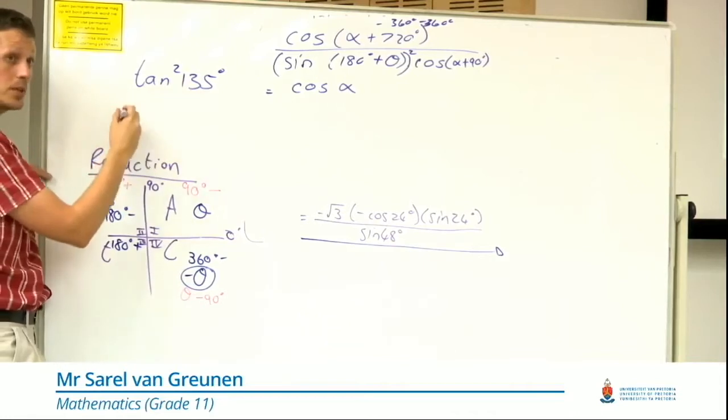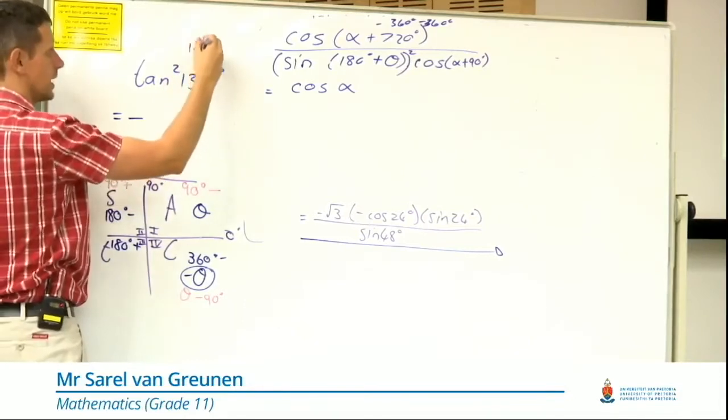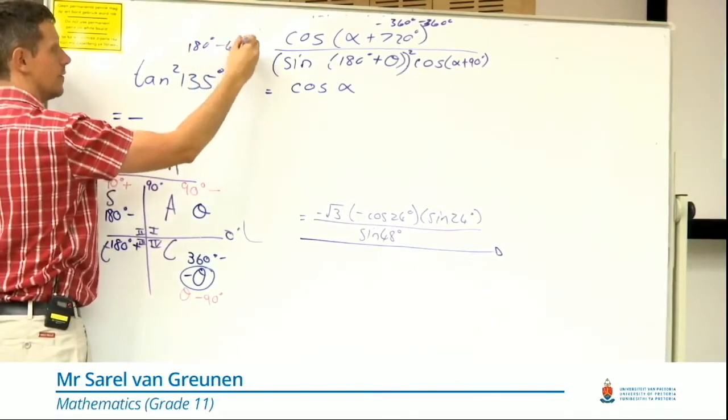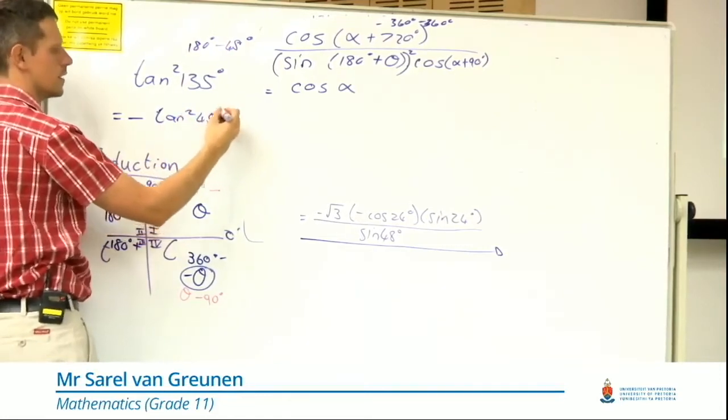tan in the second quadrant is negative and it's 180 minus 45, so it's negative tan squared 45. And then I mark it wrong.